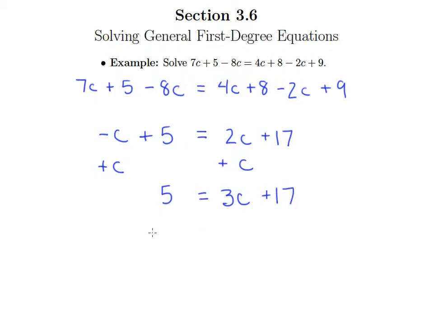Rewriting everything that I haven't changed as I go along, so I'll subtract 17 now, and 5 minus 17 will give me negative 12 equals 3c. And then finally, I can divide both sides of this equation by 3. So we get negative 4 equals c.